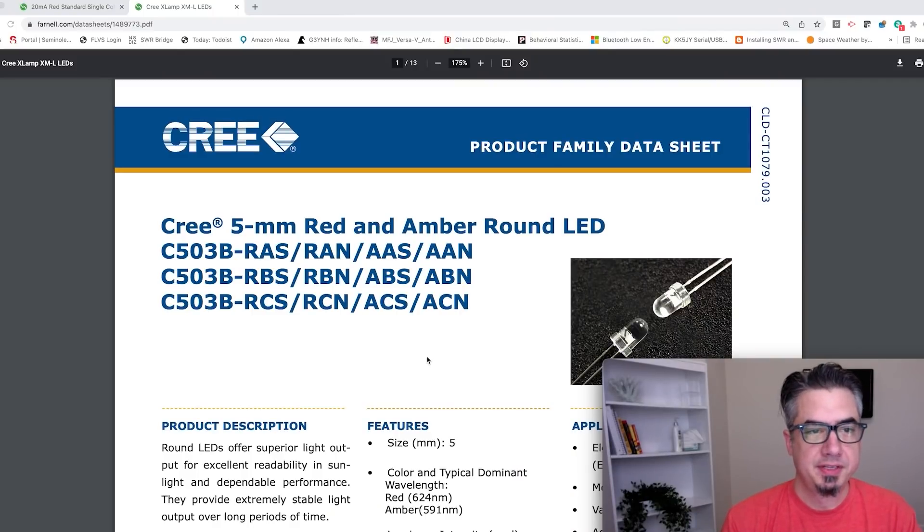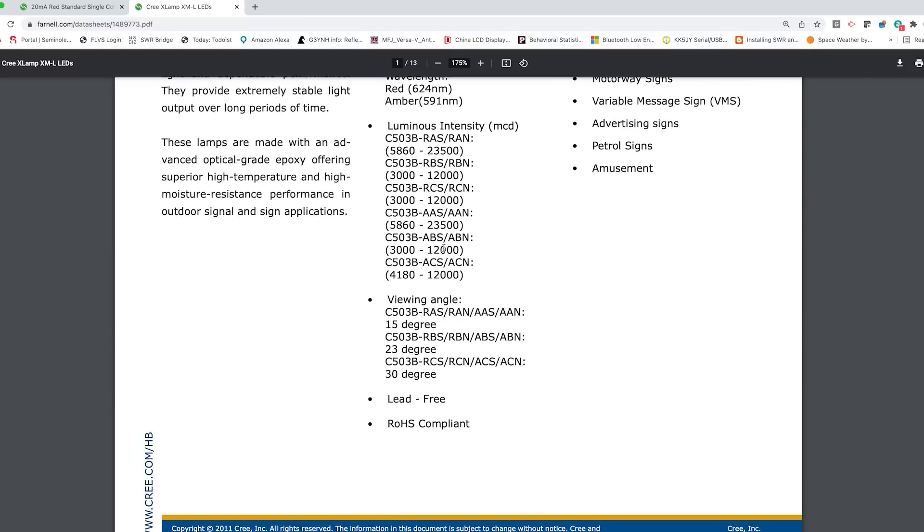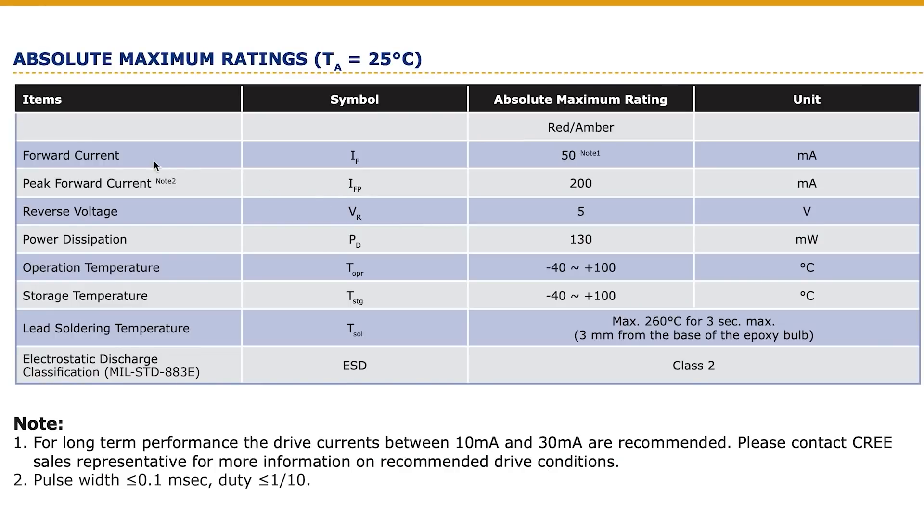All right. So here's a typical LED data sheet. Company is Cree. This is for a red LED. I'm just going to click off here and I'll disappear. But there are some parameters that we want to take a look at that are of importance to us. The first one is the forward current. The absolute maximum rating for continuous duty is 50 milliamps. And there's a note one here that says we should for long-term performance drive at between 10 and 30 milliamps. And typically, 10 to 20 is where you kind of, if you don't know, that's kind of a safe ballpark to operate in.